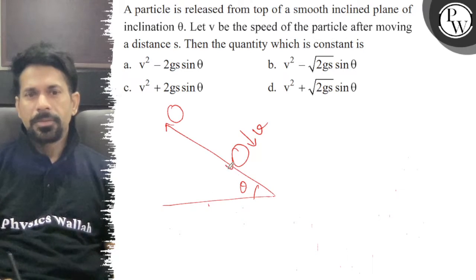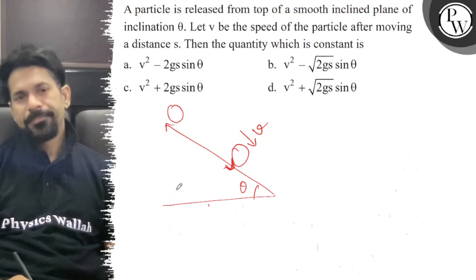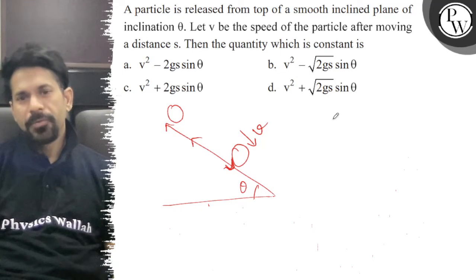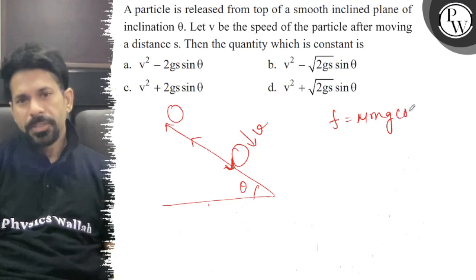I think constant friction. Then the friction will be basically, so the value of friction mu mg cos theta, because it is sliding. Friction will be done basically.